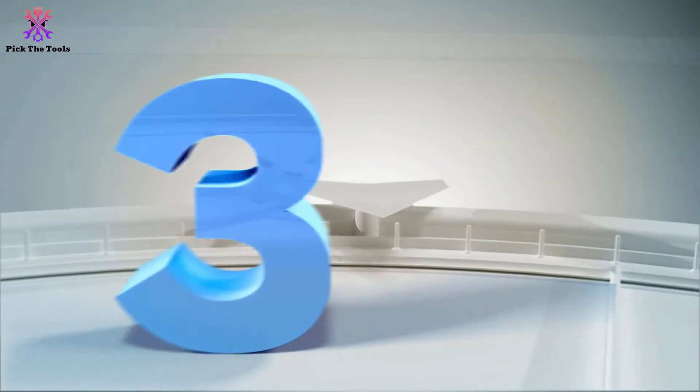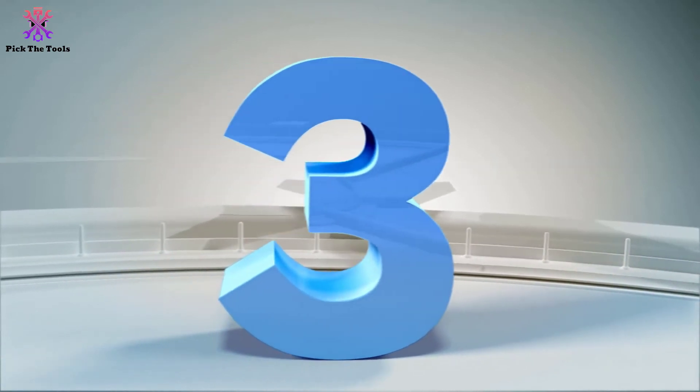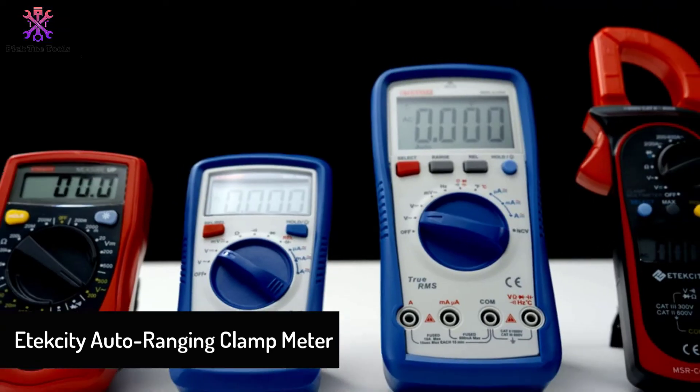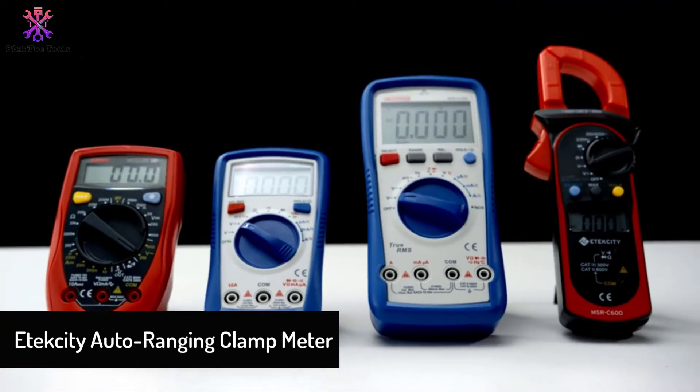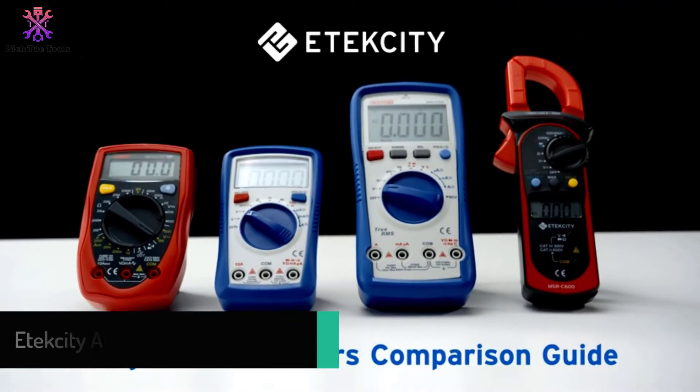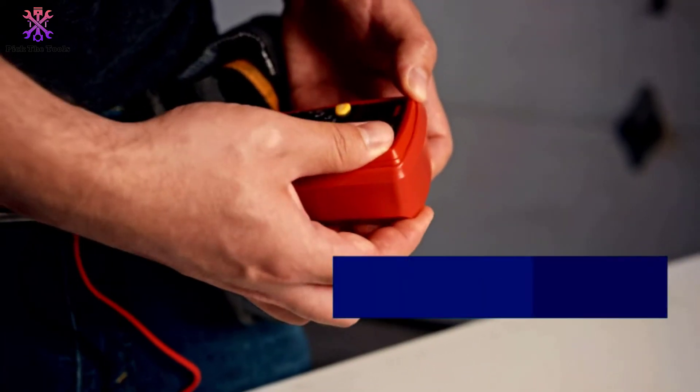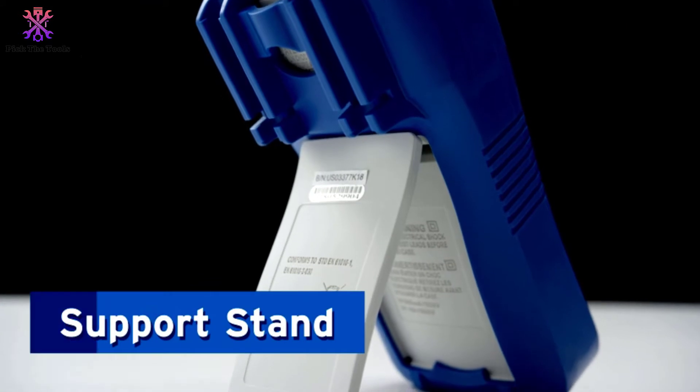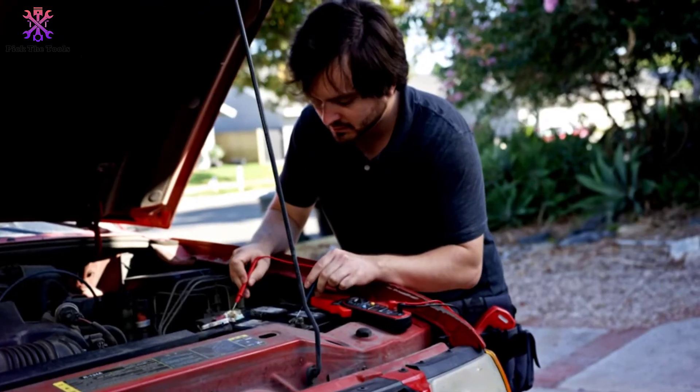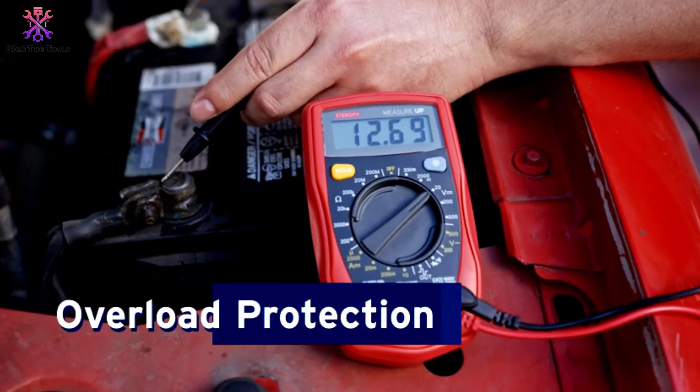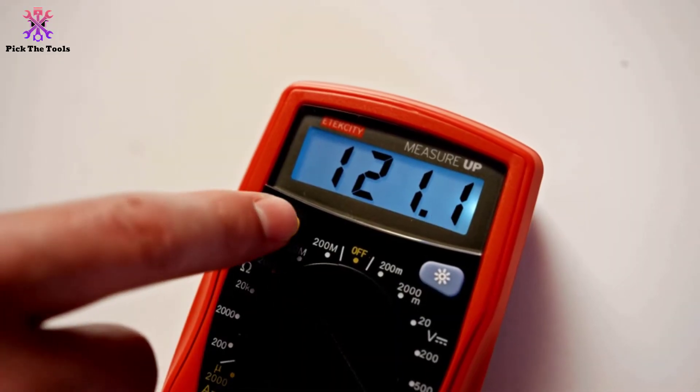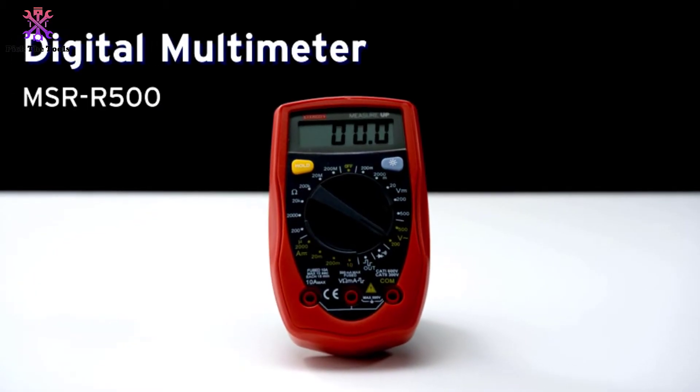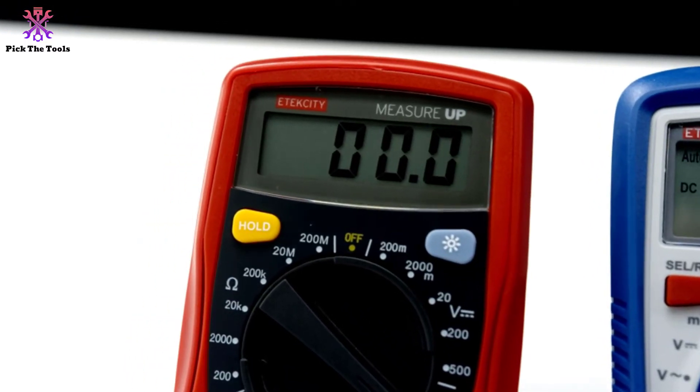At number three, we have the Etekcity auto-ranging clamp meter. When you are searching for the best clamp meter for auto-ranging measurements and HVAC, the name Etekcity comes up a lot. This brand is famous for producing high-quality electrical tools and devices. It's used in different types of tests like diode and continuity tests. This high-quality clamp meter is made of industrial-grade materials with the latest technology, hence it is a worthy purchase.